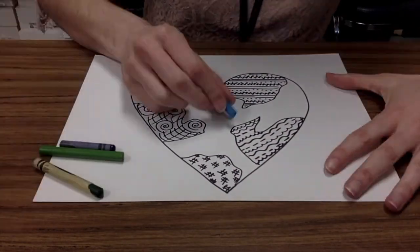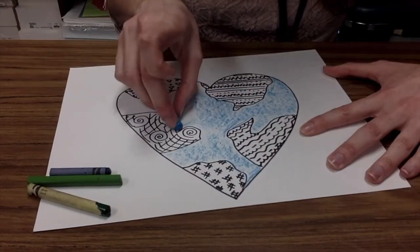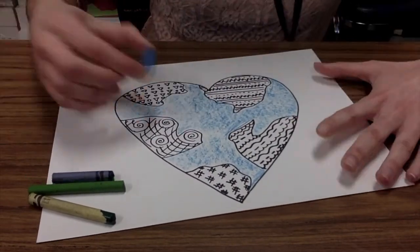Once you've drawn patterns inside of your land, it's time to add color. We'll use blues for the water and green for the land.